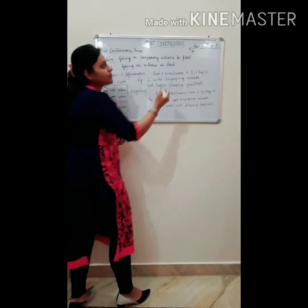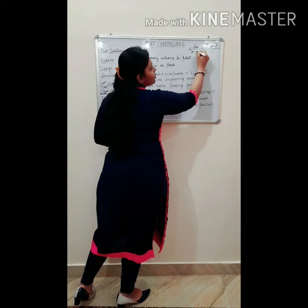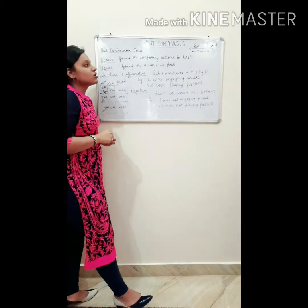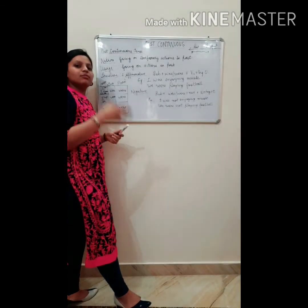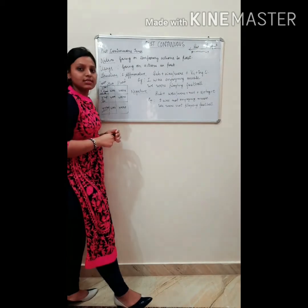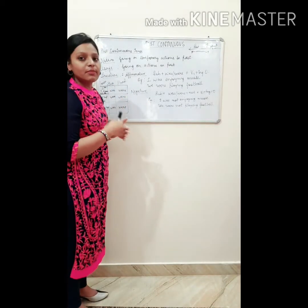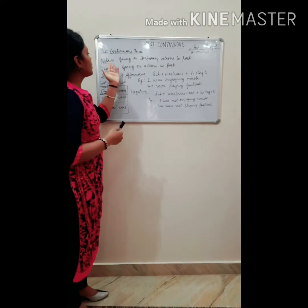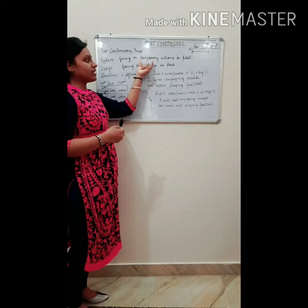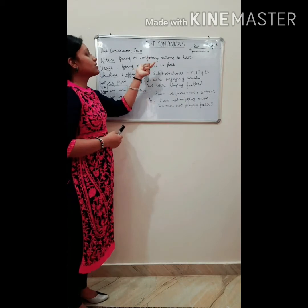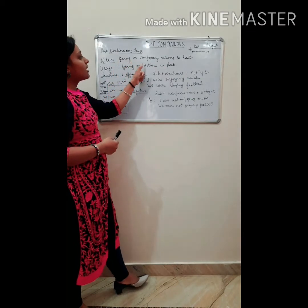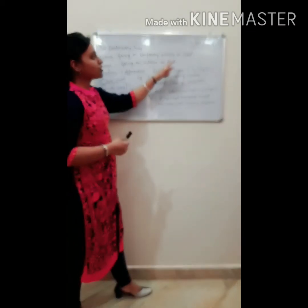The action begins in the past and is still continuing in the past. The still-going-on actions in the past come under past continuous tense — actions which are going on in the past. The nature of this tense is going-on temporary actions in the past. Remember the word temporary, because continuous tense is used for temporary actions.